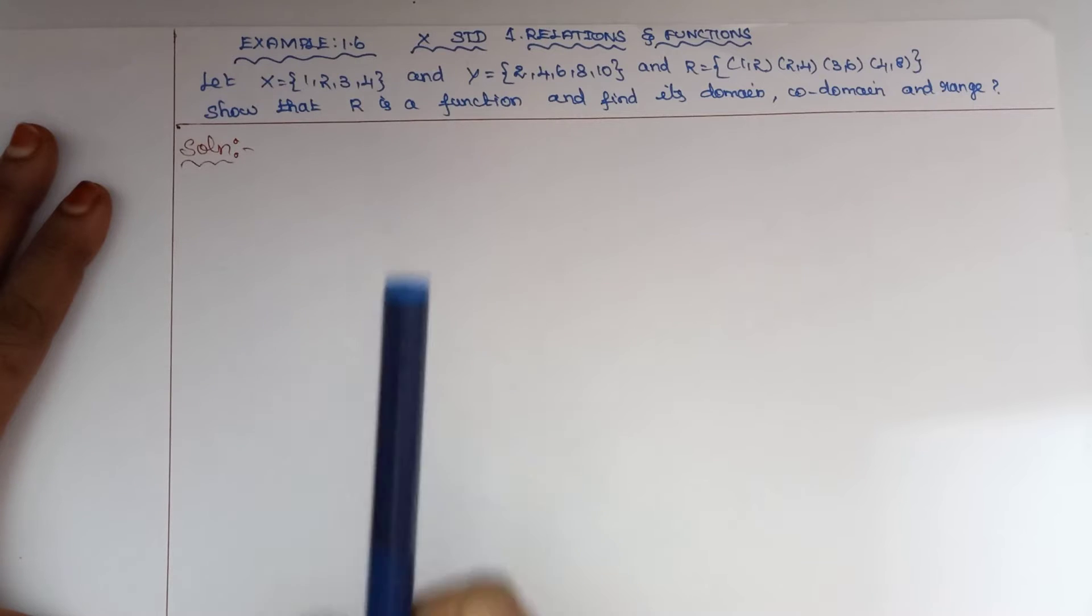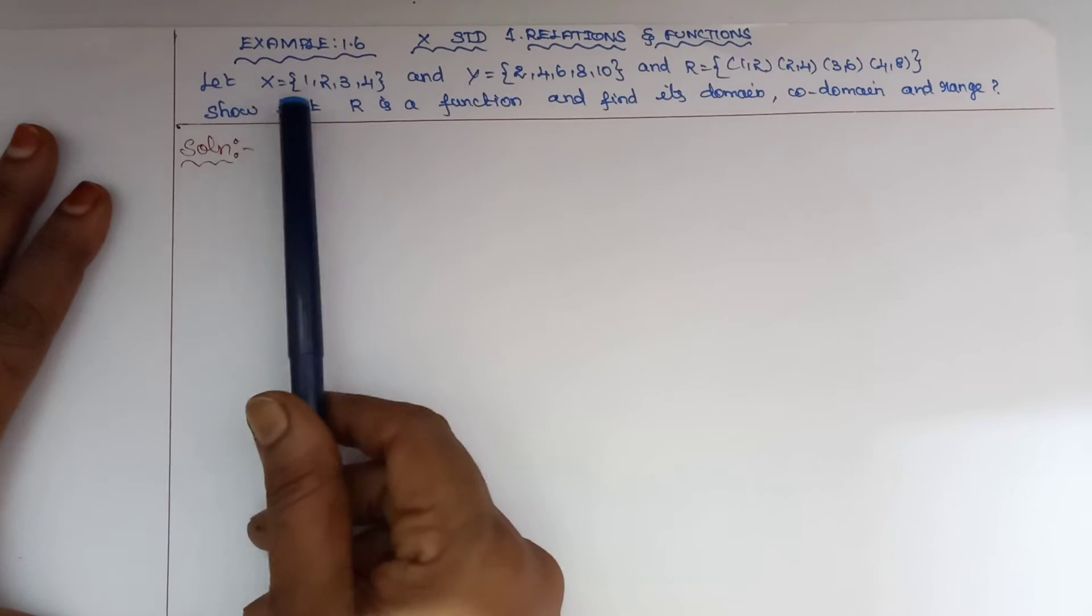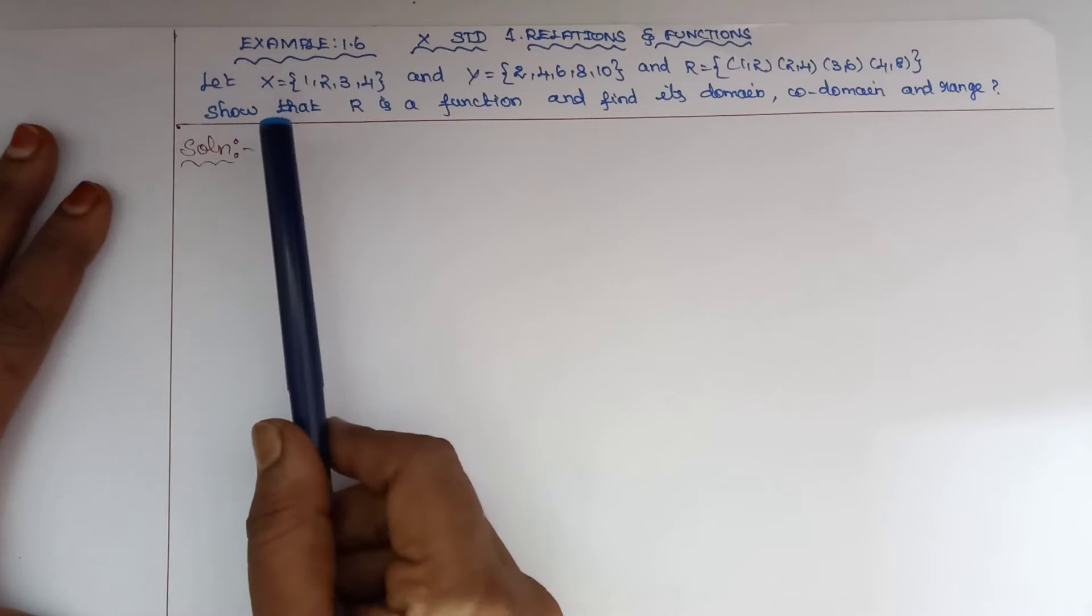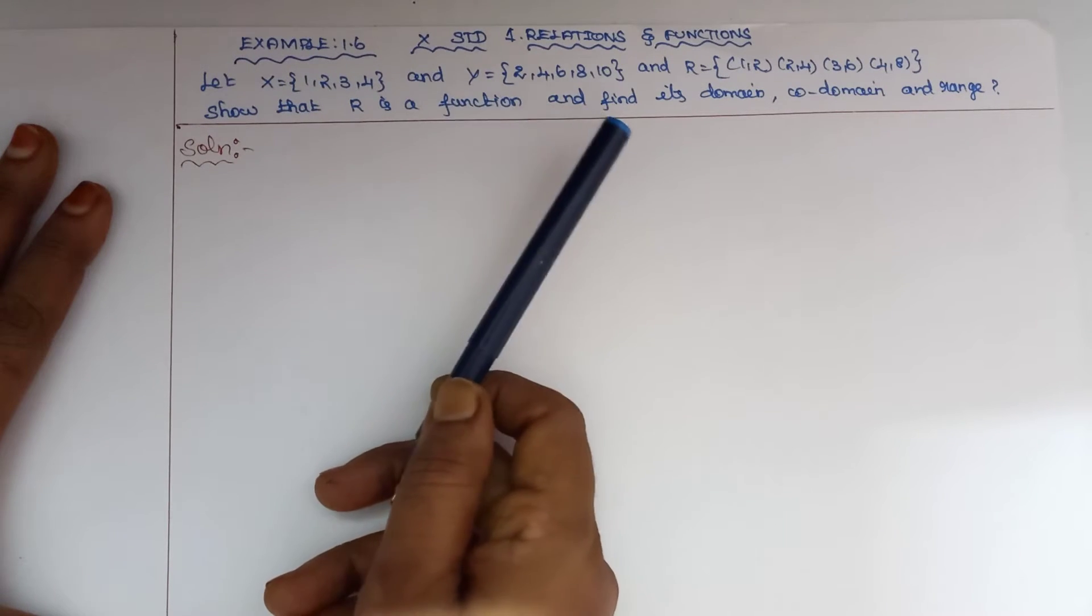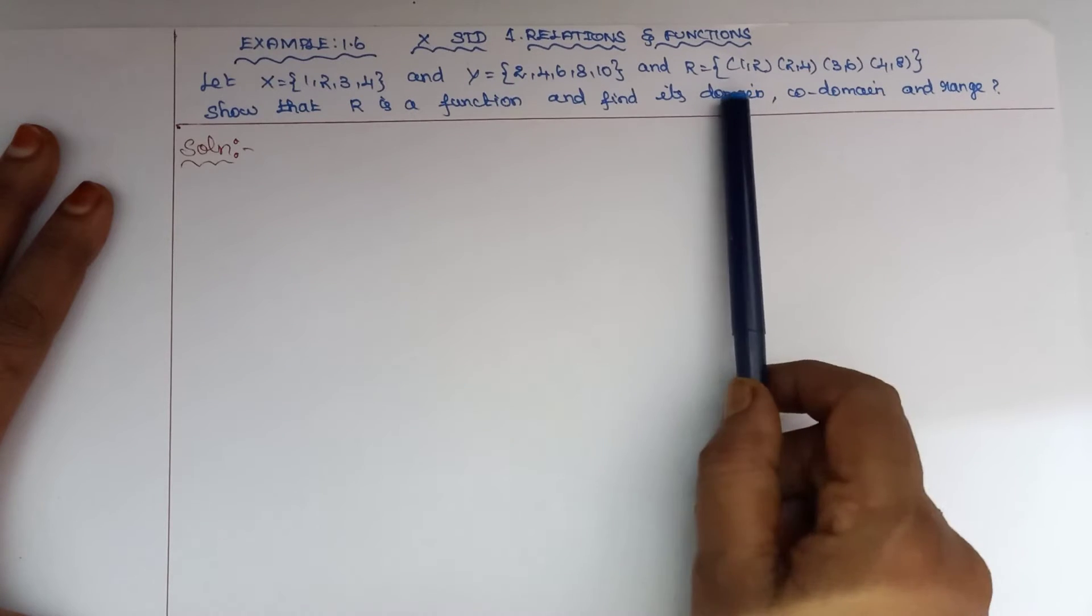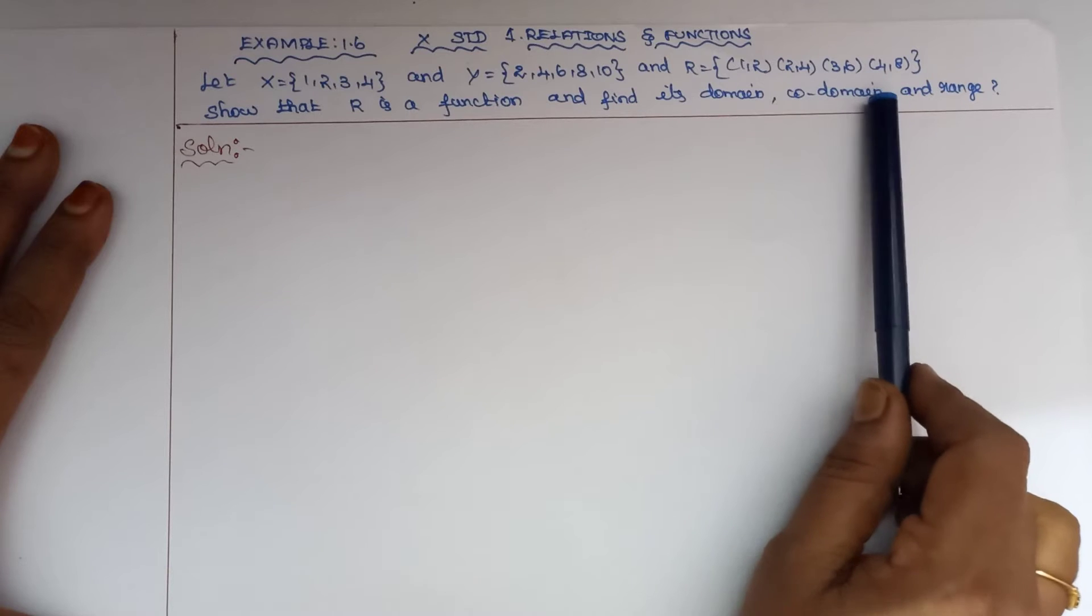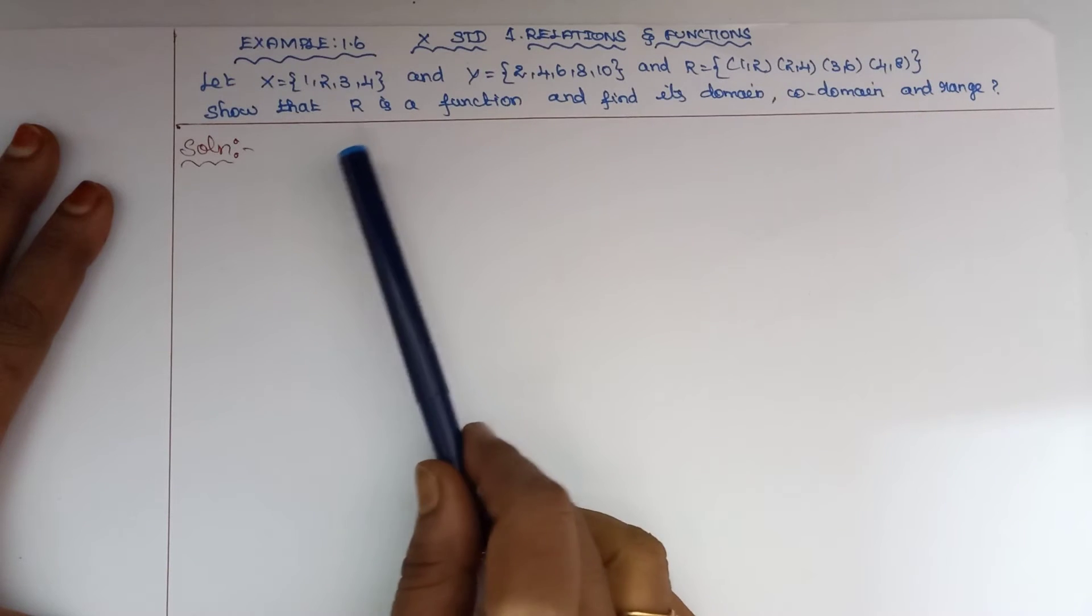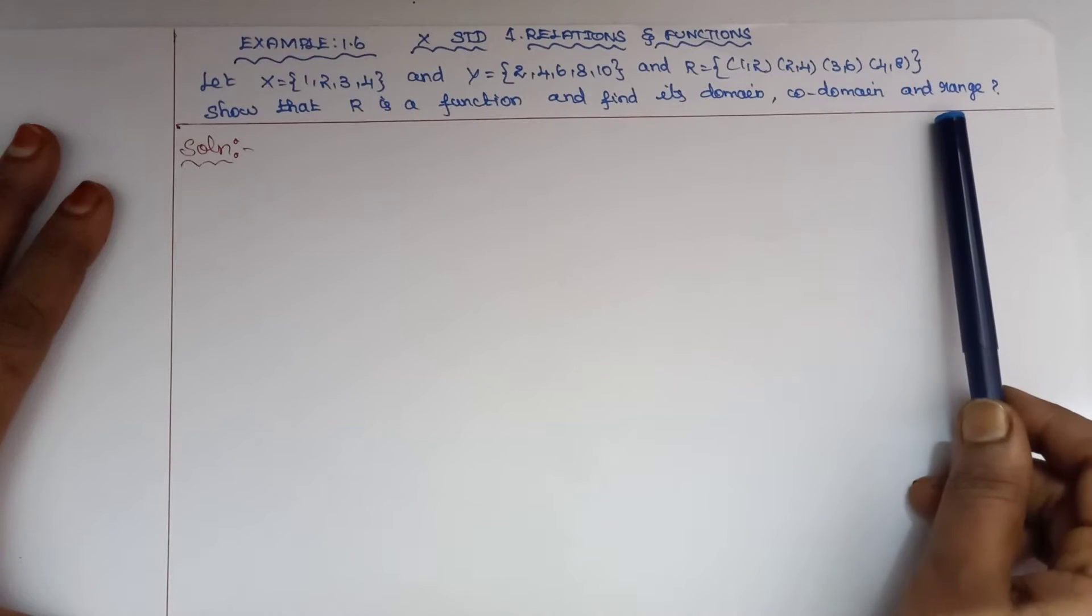Good morning to everyone. 10th standard, first chapter: Relations and Functions, Example 1.6. Let X = {1, 2, 3, 4} and Y = {2, 4, 6, 8, 10}, and R = {(1,2), (2,4), (3,6), (4,8)}. Show that R is a function and find its domain, co-domain, and range.